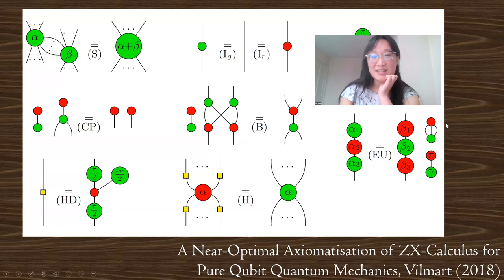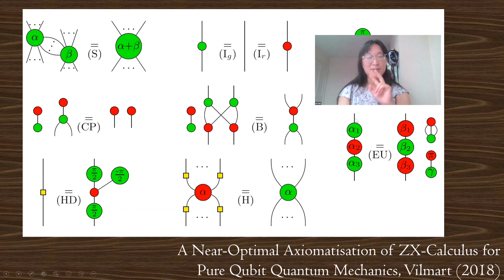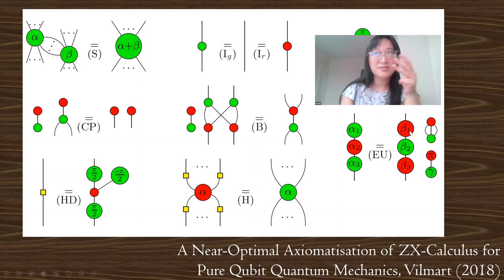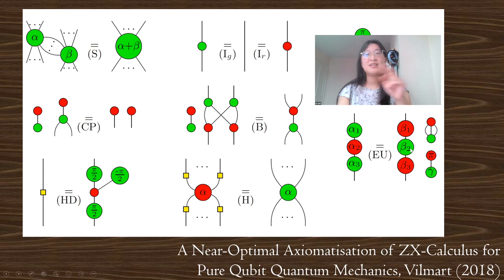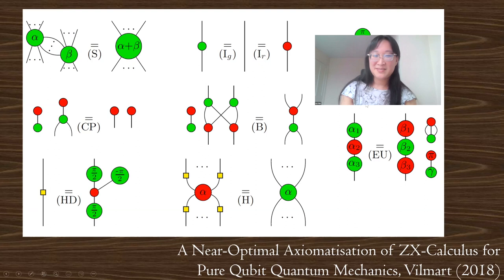The last rule captures that single-qubit unitaries are rotations on the Bloch sphere. If you rotate by the Z axis by a certain angle, then the X axis, then the Z axis again, you can always find three angles equal to a rotation first about X, then Z, then X. This rule captures the relations of complicated Bloch sphere rotations simply as three alternating Z and X axis rotations.